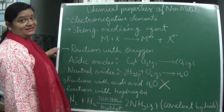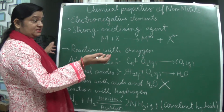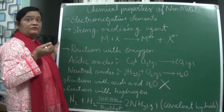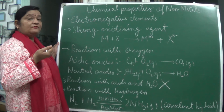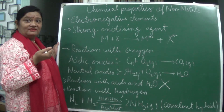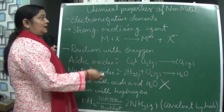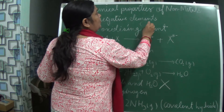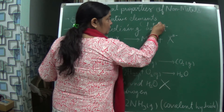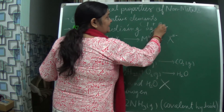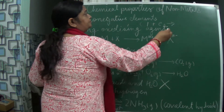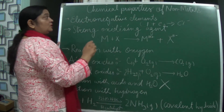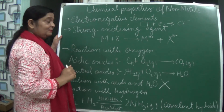They are electronegative elements, meaning they have the tendency to attract the shared pair of electrons towards itself and form a negative ion. Like if we take the example of chlorine, this chlorine will take one electron and it will form Cl minus. So these are electronegative elements.